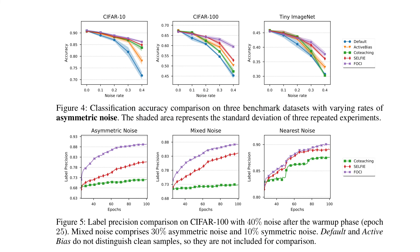Figure 4 shows experimental results comparing against Active Bias, Co-teaching, Selfie, and their methodology FOCI, demonstrating that FOCI usually achieves better results. On the x-axis you have the noise rate, which increases, and on the left axis you have accuracy on the validation set. Figure 5 also shows that their method is superior under different types of noise.